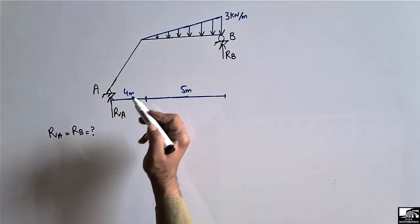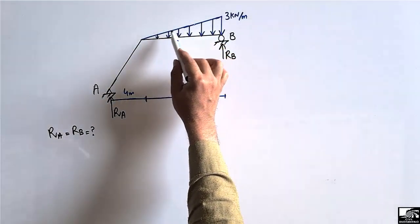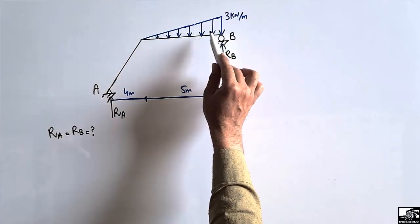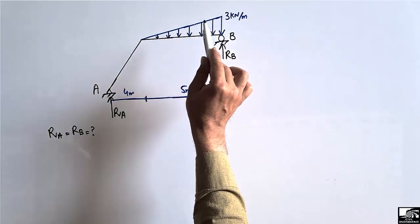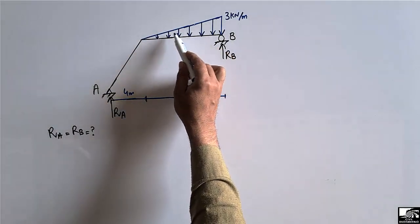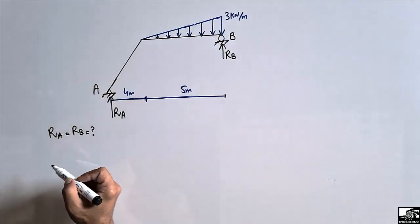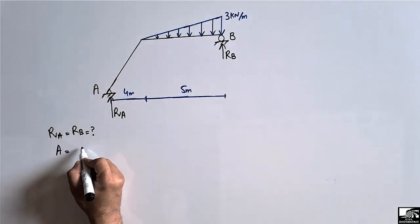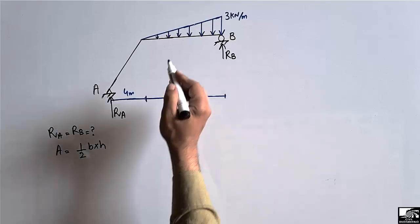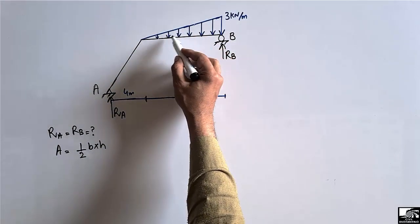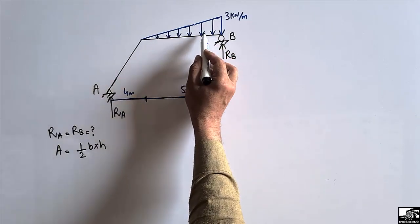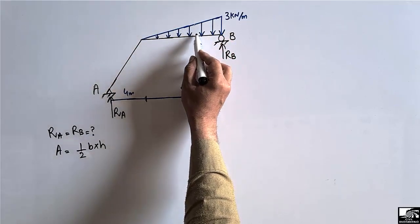The first step is to find out the total load acting on this beam. Since this is a uniformly varying load, we have to convert it into a concentrated load. To do this, we are going to find out the area of this triangle, which will give us the equivalent concentrated load acting at the centroid of the triangle.